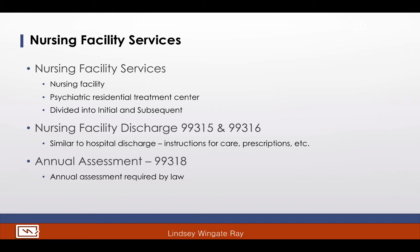Parenthetical instructions in your CPT manual tell us to see 99315 and 99316 for nursing facility discharge services. When a patient is discharged from a nursing facility, all services provided on that date are included in the time used to report the discharge. As with discharge from hospital admission, this includes instructions for care, preparation of discharge papers, prescriptions, and referral forms, in addition to any care given to the patient on that date. The last subcategory under nursing facility is other nursing facility services. This section includes one code for the annual assessment required by law for patients in a skilled nursing facility. Every year, these patients must have a detailed annual assessment, which would be coded with 99318.